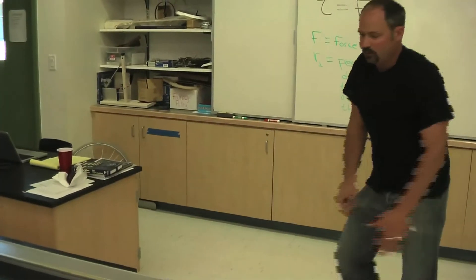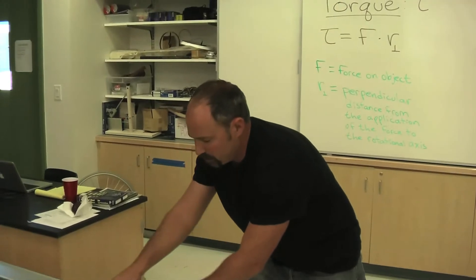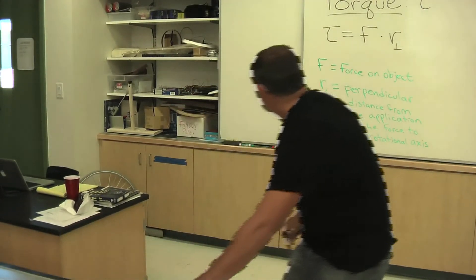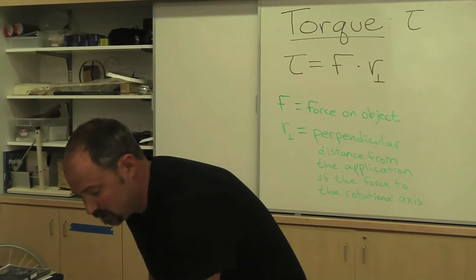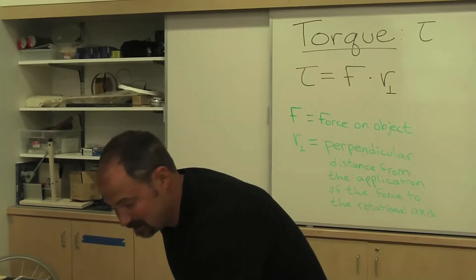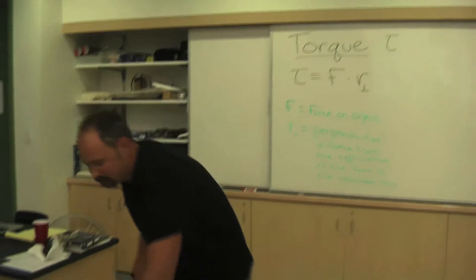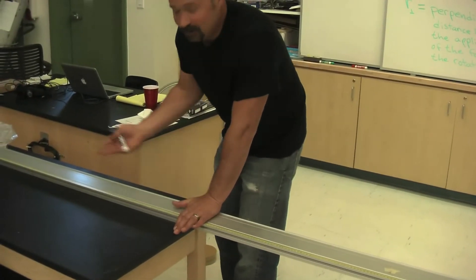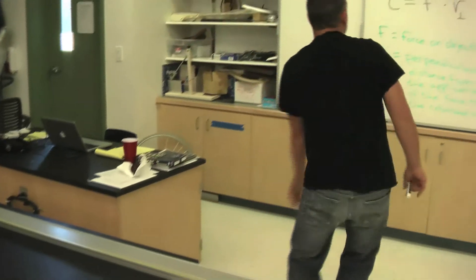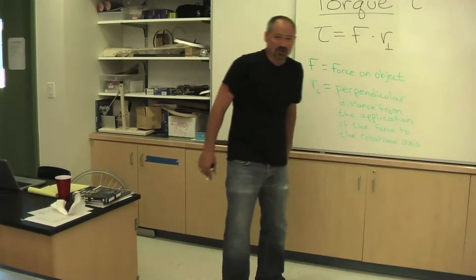Therefore, I'm getting a large torque. Whereas here, my r perpendicular is small, and therefore I get a small torque, which means it's harder to rotate. So I have to increase my force to get the same torque. And of course, if I push down here right on the rotation axis, no matter how hard I push, there is no rotation because r perpendicular is zero.